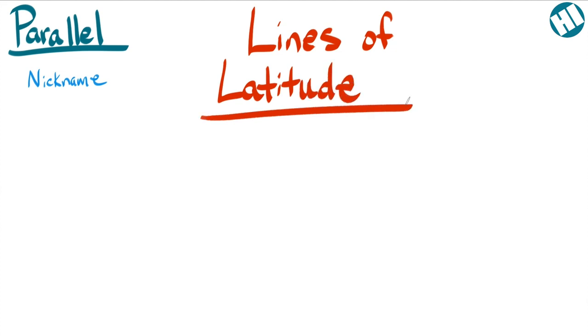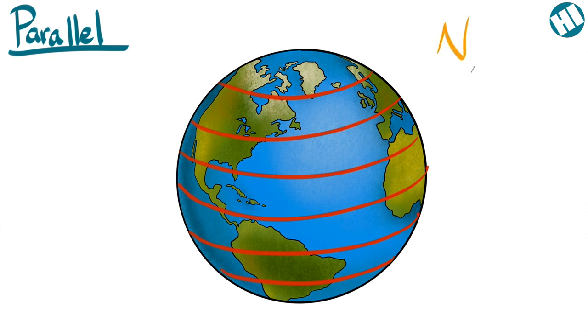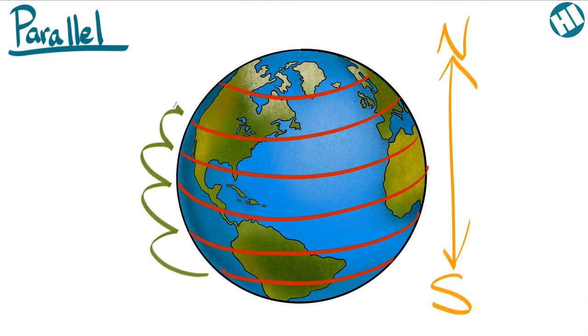Lines of latitude are very useful to draw on a map or a globe because they measure how far north or south you are above something. Knowing how far north or south you are on the earth is a big step in finding out exactly where you are in general on the entire planet.